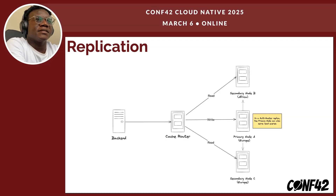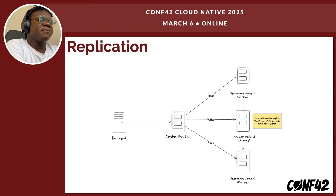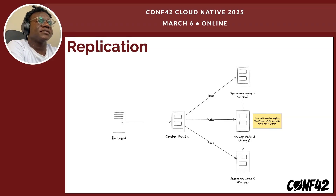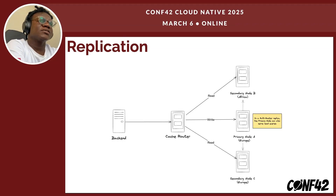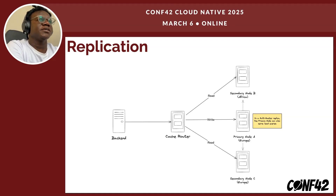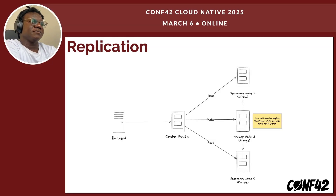We have a primary node A, which handles write requests — this is a master-secondary setup. The primary node is responsible for write requests and synchronizing data across the secondary nodes, while the secondary nodes handle read requests. The cache router assigns a node based on which is closest to the user making the request. If a user is making a request from Africa, we route the cache request to the node in Africa. Same for Europe. This is a way to reduce latency using replication.